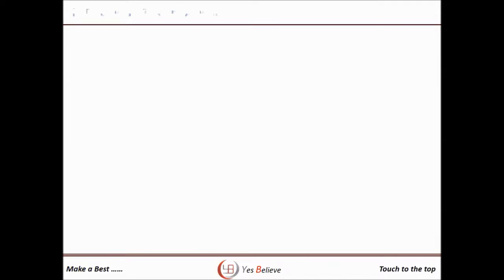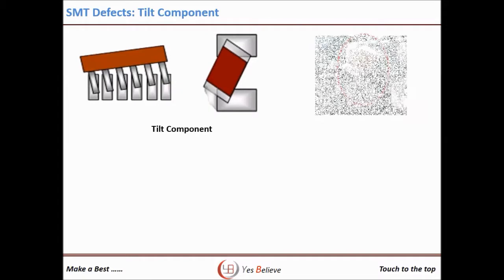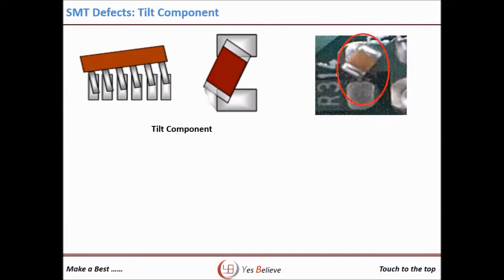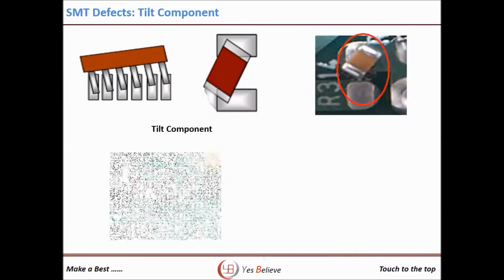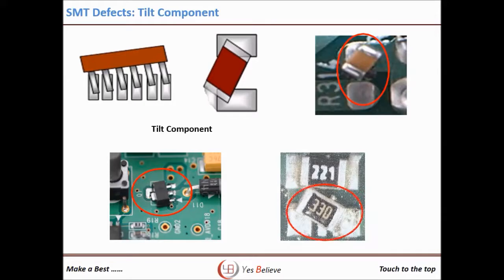The next defect is component tilt. The reasons for component shift and component tilt are different — many people use the name component shift for tilt. The tilt defect occurs due to wrong nozzle selection, nozzle blockage, or low suction level.